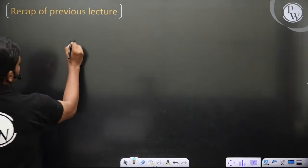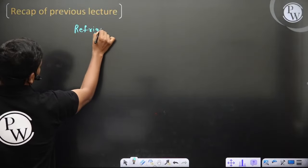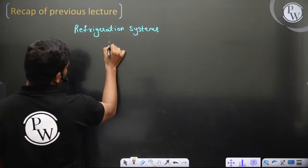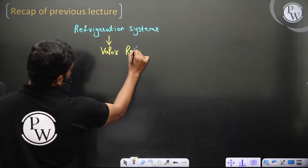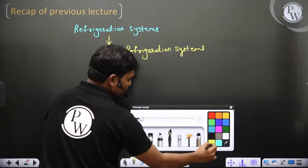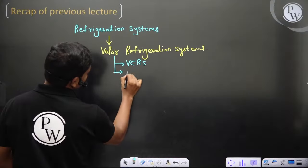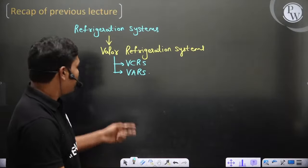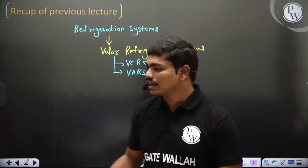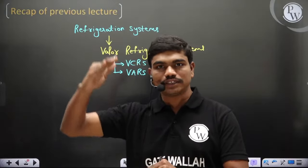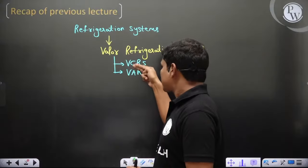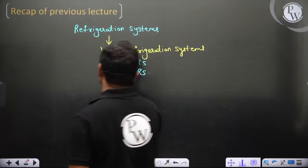If you go to the last lecture, we were talking about refrigeration systems — specifically vapor refrigeration systems. We talked in detail about vapor refrigeration systems. We saw basically two types: vapor compression refrigeration system (VCRS) and vapor absorption refrigeration system (VARS). The main difference is that in VCRS we directly use a compressor to compress the vapor, whereas in VARS the compression from low pressure to high pressure is due to chemical absorption.